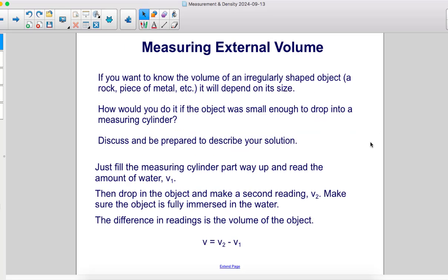Just fill the measuring cylinder part way up and read the amount of water, V1, the first volume. Then drop in the object and make a second reading, V2. Make sure the object is fully immersed in the water.